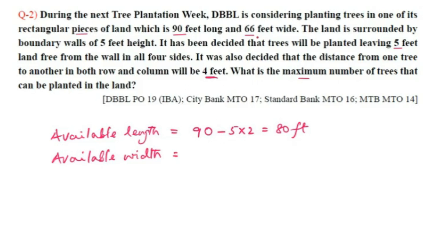For plantation, the total width is 66 feet. Removing 5 feet on each side: 5 × 2 = 10, so 66 − 10 = 56 feet available width for plantation.